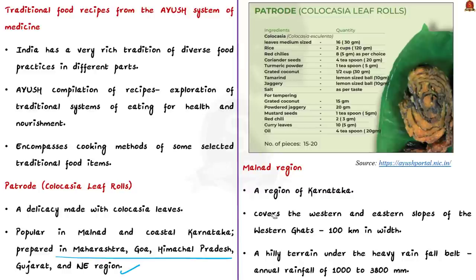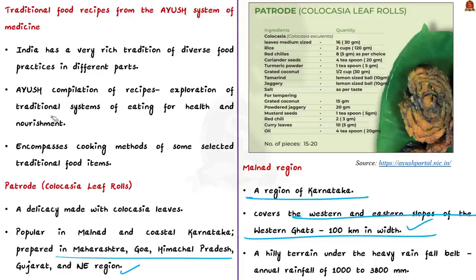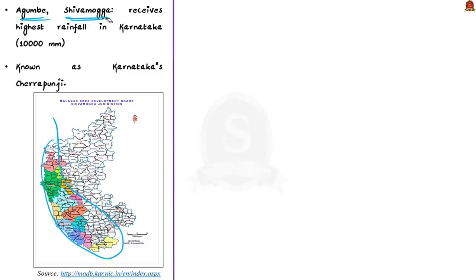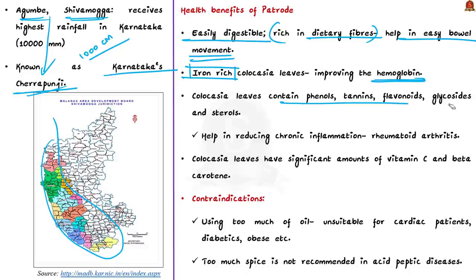Patrode is widely cooked in Malnad belts during the rainy season. The Malnad region covers the western and eastern slopes of the Western Ghats in Karnataka, with a width of 100 km, a hilly terrain under heavy rainfall, and an annual rainfall of 100 to 380 cm. Agumbe in Shivamoga district receives the highest rainfall in Karnataka — close to 1000 cm — and is therefore called Karnataka's Cherrapunji. Health benefits of Patrode include: it is easily digestible, rich in dietary fibers helping in easy bowel movement, and the iron-rich Colocasia leaves help improve hemoglobin. The leaves contain phenols, tannins, flavonoids, glycosides, and sterols, which help reduce chronic inflammation like rheumatoid arthritis.